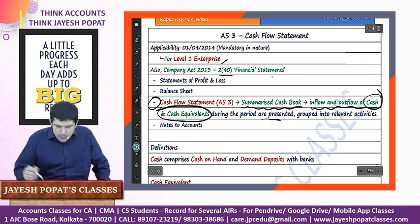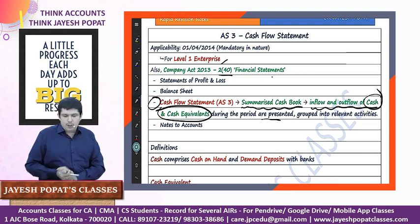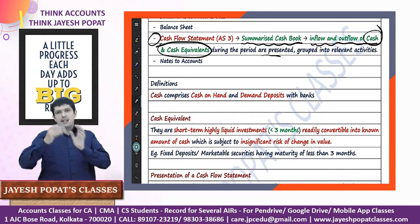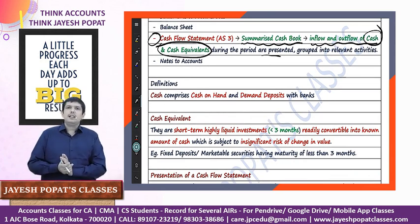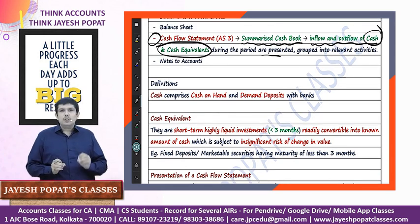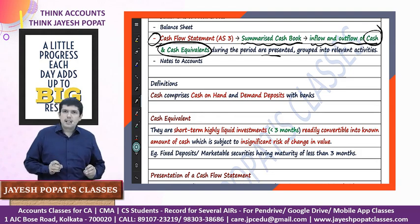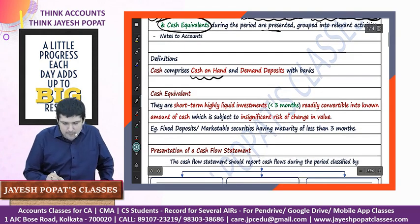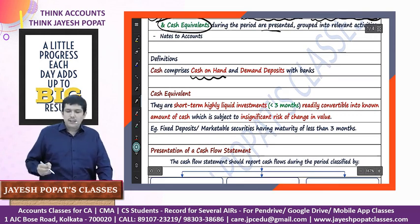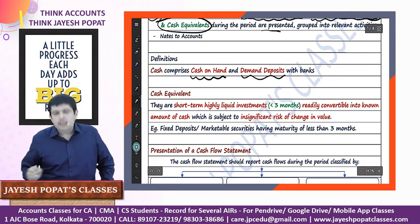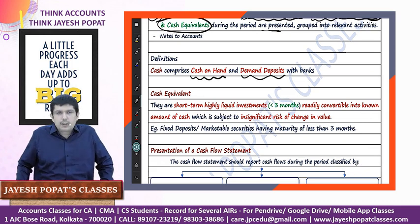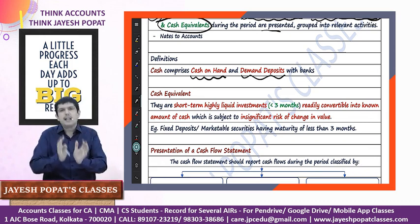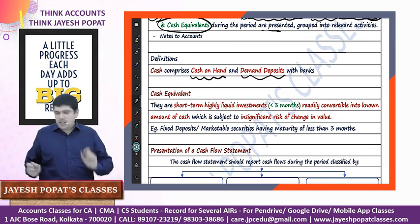Since the cash flow statement presents the inflow and outflow of cash and cash equivalents divided into these three activities, let us understand what we mean by cash and cash equivalents. Cash has been defined as cash on hand, which is normally the liquid cash resource you have, and demand deposits - meaning the current account with which the business holds its money. So cash means cash in hand and cash at bank.